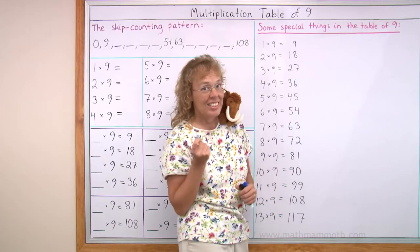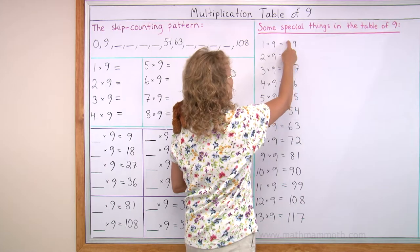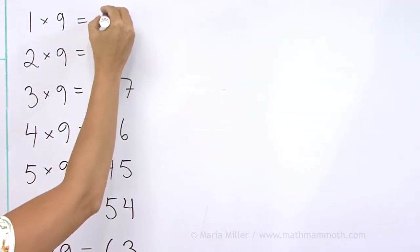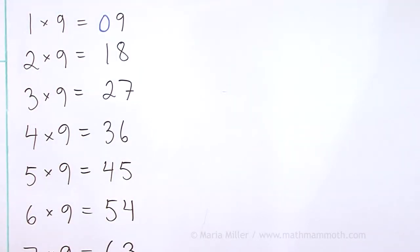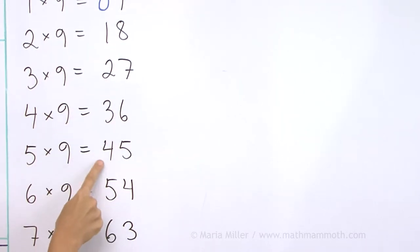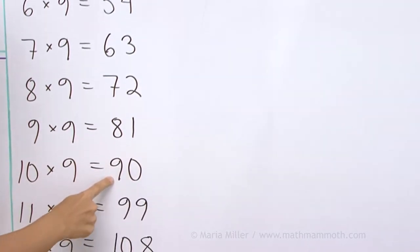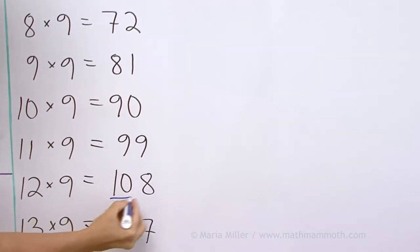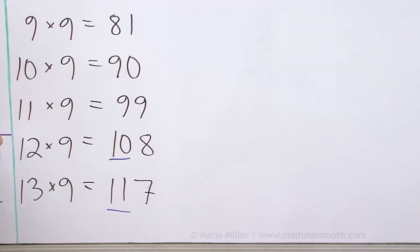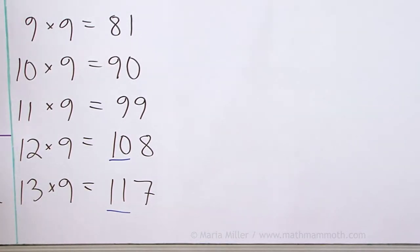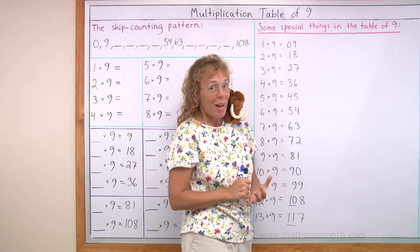And then let's look at the tens digits. Here there are no tens, but you could imagine 0 there. And then we have 0, 1, 2, 3, 4, 5, 6, 7, 8, 9. And then 9, 10, 11, and there would be 12, 13, and so on. So that's quite a pattern.